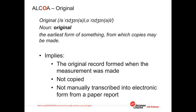The O in ALCOA suggests original — the earliest form of something from which copies may be made. There is naturally a danger with every transcription of test results from one form to another. Even scanning multiple paper records into electronic format runs the risk of duplication or even missed scans. So the FDA recommends that the electronic record should be the original record created when the test was completed. Manually transcribed records are the riskiest, attracting the biggest opportunity for human error.